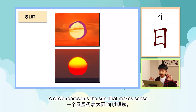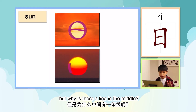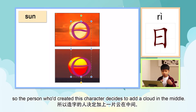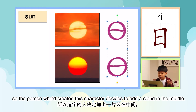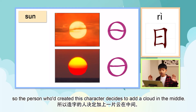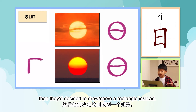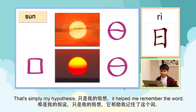A circle represents the sun — that makes sense. But why is there a line in the middle? My thinking is a circle is too simple, so the person who created this character decided to add a cloud in the middle. After some time, people thought drawing a nice round circle is pretty hard, so they decided to draw a rectangle instead. That's simply my hypothesis. 只是我的假想。 It helps me remember the character.